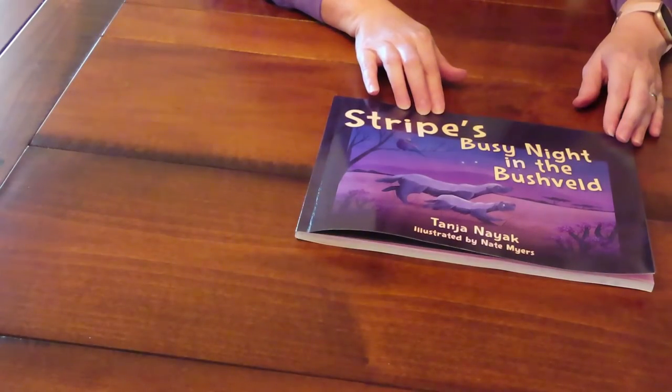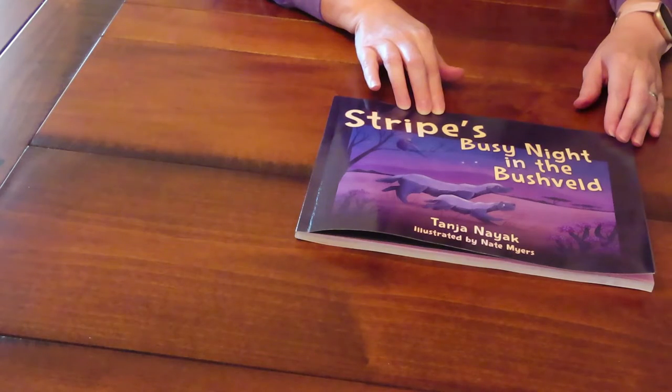Stripe's Busy Night in the Bushveld by Tanya Nayak, illustrated by Nate Myers, is a lovely children's picture book about nocturnal creatures in Africa.